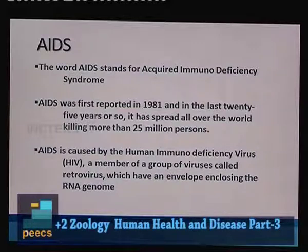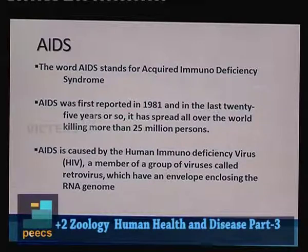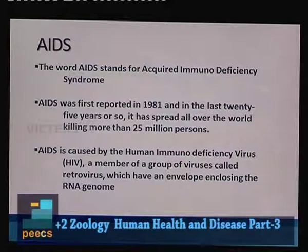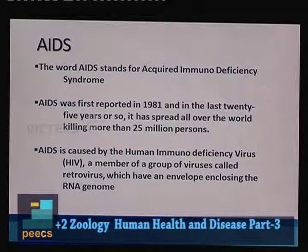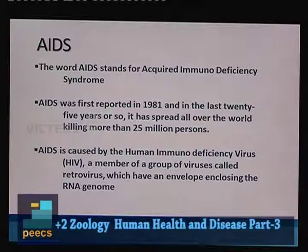Retroviruses usually have RNA as their genome, and from that RNA they make a DNA. Whenever DNA is made from RNA, that is called reverse transcription. So retroviruses are capable of reverse transcription, and HIV is also capable of this particular process.